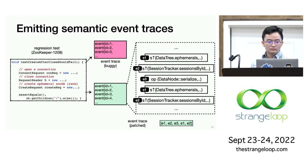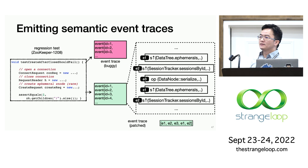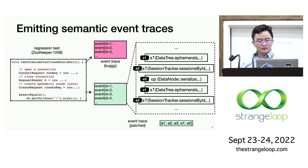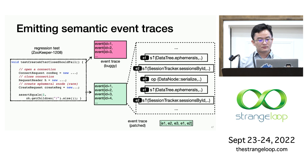To emit those semantic event traces, OathKeeper automatically instruments both the buggy and patched systems, then exercises the system with the regression test to generate the event traces. Here is a subset of the traces from the ephemeral node test from ZooKeeper. You can see it involves key events such as updates to the ephemeral nodes variable, the session list, and invocation of the serialized operation during snapshotting. We mark those events as E1, E2, and E3, and our goal is to infer the relations among those events.